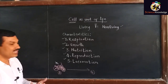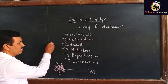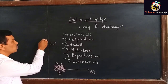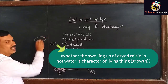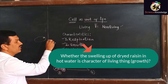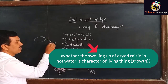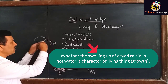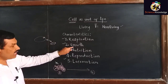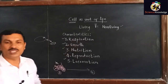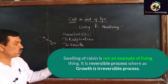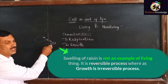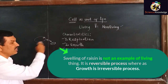Or we can take the example of a raisin which is put in hot water. After putting it in hot water, it will swell up, and after drying, it will again shrink. This increase in its volume appears to be similar to growth, but it is not called as growth because it is a reversible process. Therefore the raisin does not show growth and it is a non-living thing.